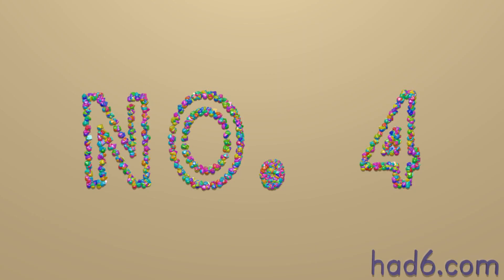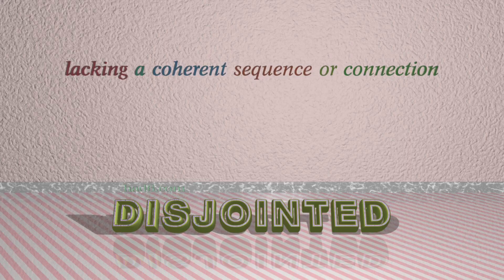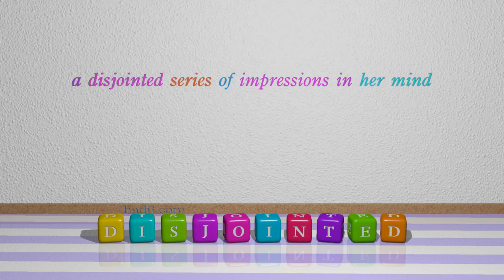Number 4: Disjointed. Which means lacking a coherent sequence or connection. For example: A disjointed series of impressions in her mind.